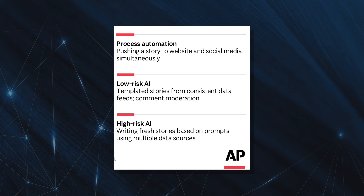There's low risk AI, like the Associated Press used with automated earnings reports in 2014. AP gets structured data — the content in column A is reliably the same — and has created a template so that if a stock price goes up, the template will use the word 'up.' By using natural language generation, AP went from writing 300 earnings reports by humans to producing 3,000 reports.